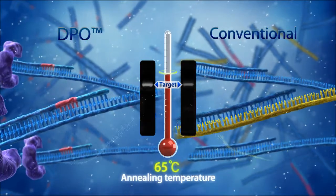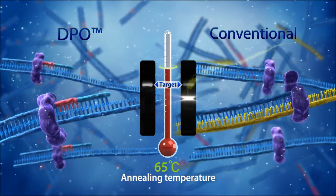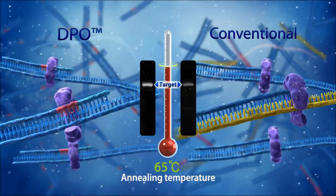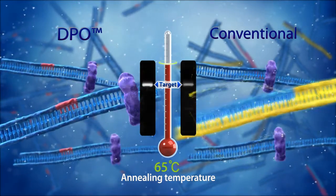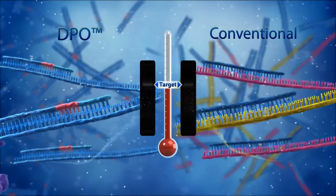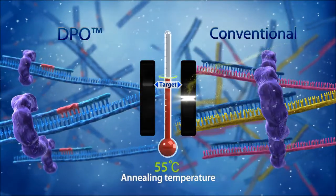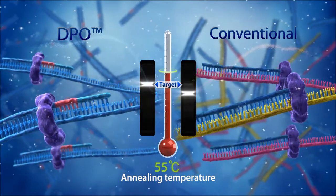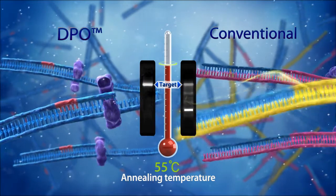The general barrier of multiplex PCR is the narrow window for an appropriate annealing temperature. However, structural features of DPO primers allow it to maintain PCR specificity over a wide range of annealing temperatures. This means DPO primers can amplify the target DNA with a tolerance in annealing temperature differences of approximately 10 degrees Celsius.